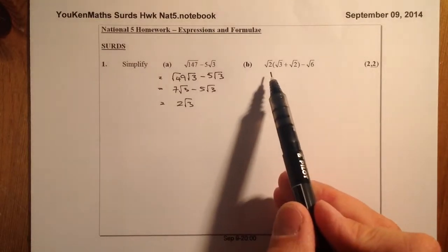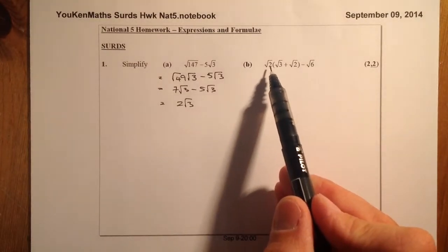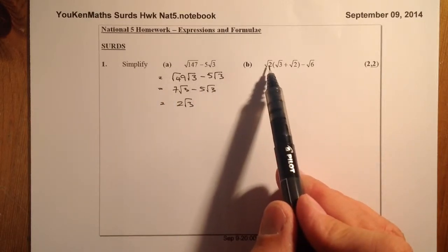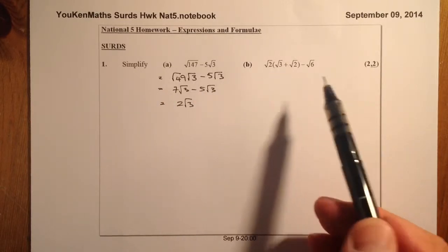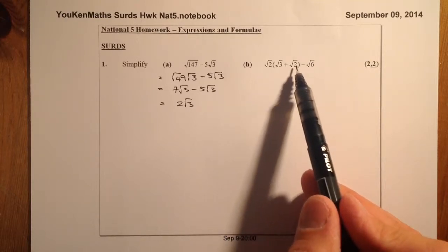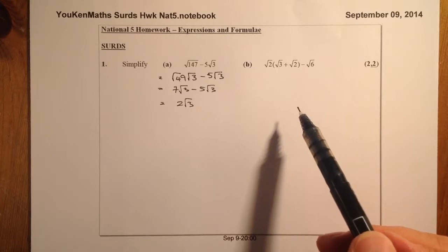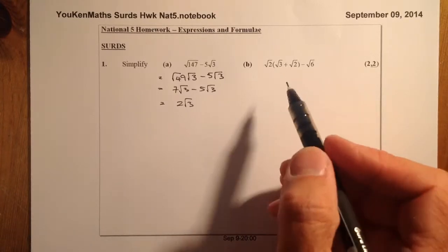So right, for B, what we've got is we've got a bracket here, and we're trying to simplify this one as far as we can go as well. So I've got a bracket that I need to multiply out. The only difference here is we've got surds that we're multiplying, and at the end I'm going to subtract a surd as well. Okay, so let's go ahead and do that.